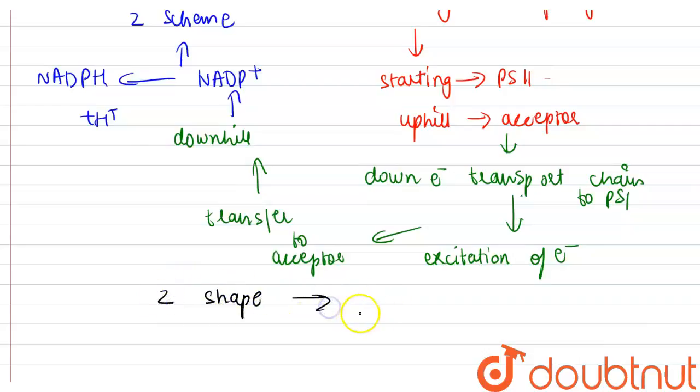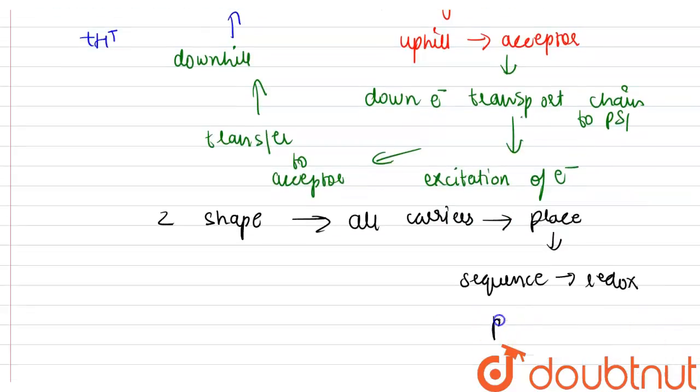This shape is formed, Z shape is formed when all the carriers are placed in a sequence on the redox potential scale.